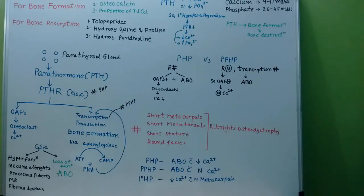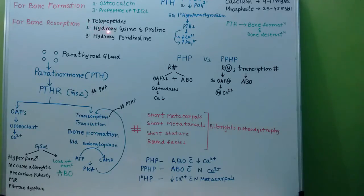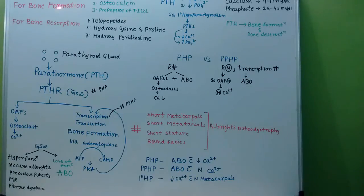Now, what are the functions of parathormone? Parathormone is involved both in bone formation and bone destruction. Markers for bone formation are: alkaline phosphatase, osteocalcin, and propeptide of type 1 collagen. Markers for bone resorption are: telopeptides, hydroxyproline, hydroxylysine, and hydroxypyridinoline. These are the important points asked in PG preparation.